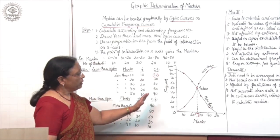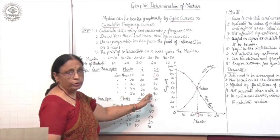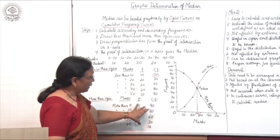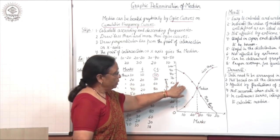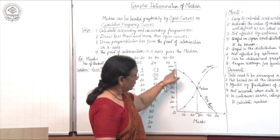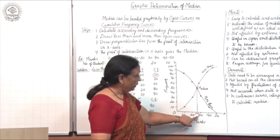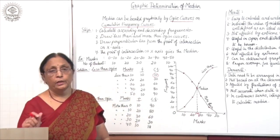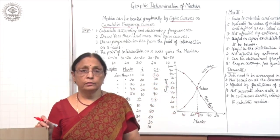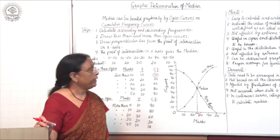So graphically, it is very easy to locate the median. The only thing required is to convert the given data into cumulative frequency of less than ojive — moving from lower to upper — and more than ojive — moving from upper to lower side. They will intersect at one point; draw a perpendicular and locate the median. This is a very simple way of finding the median.